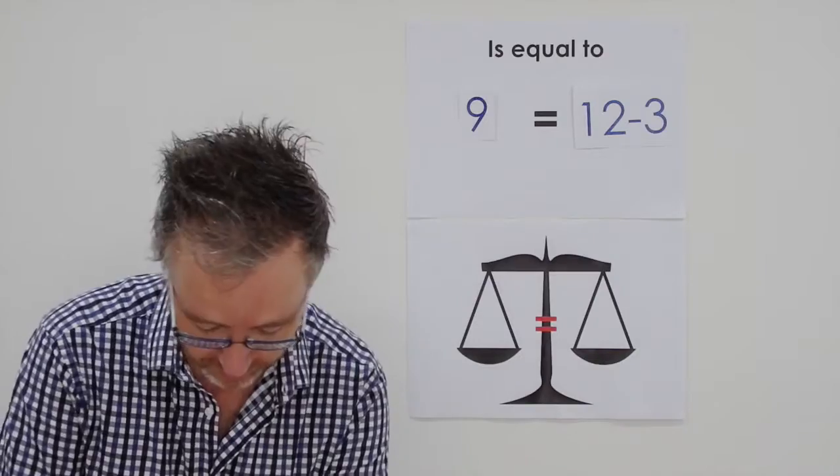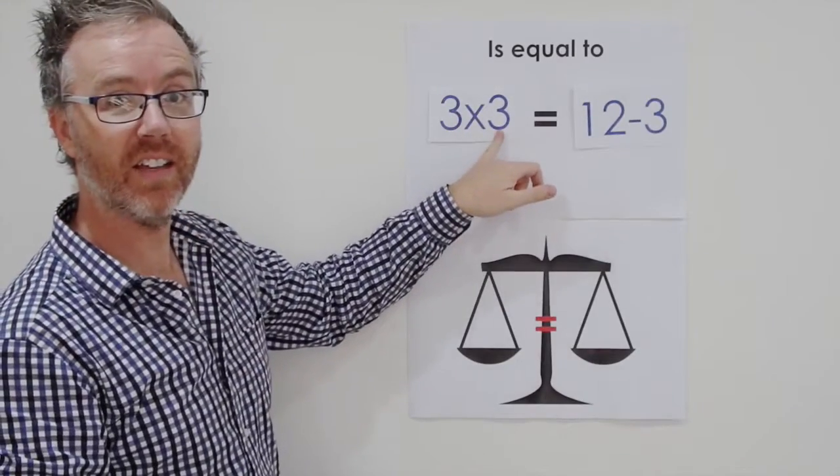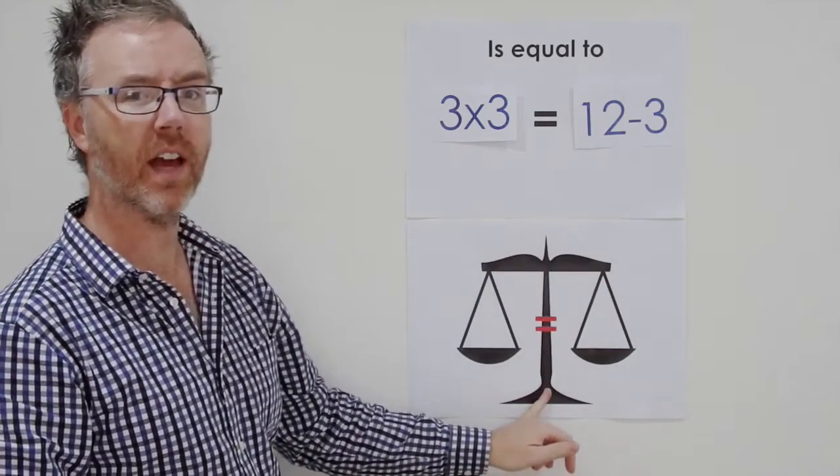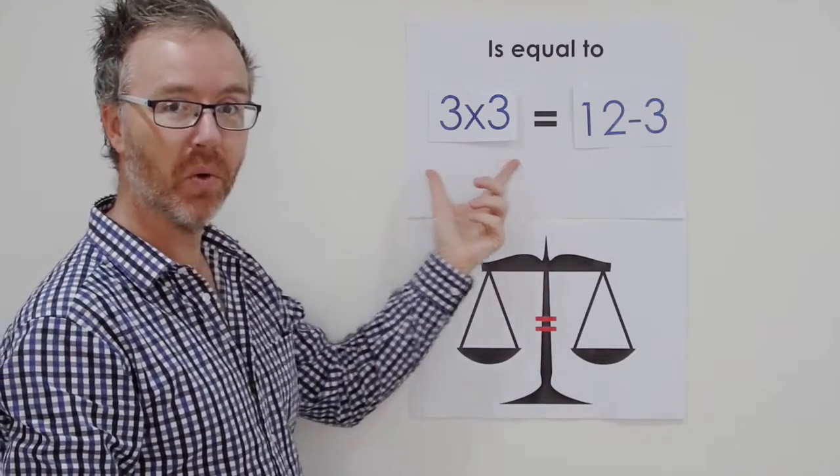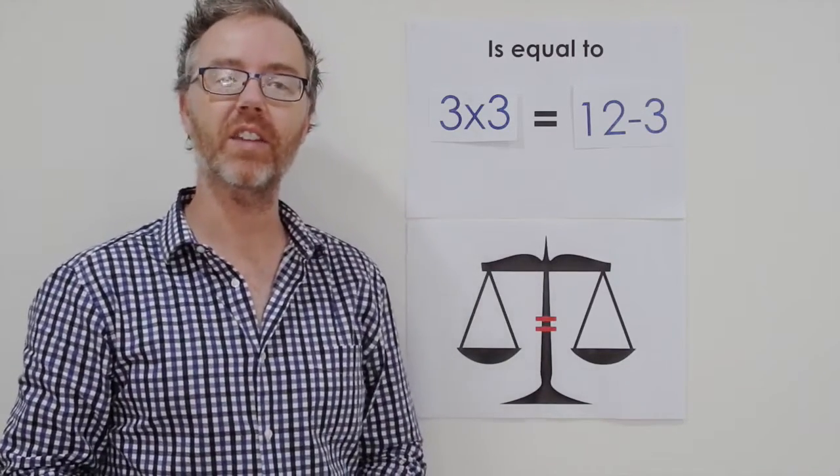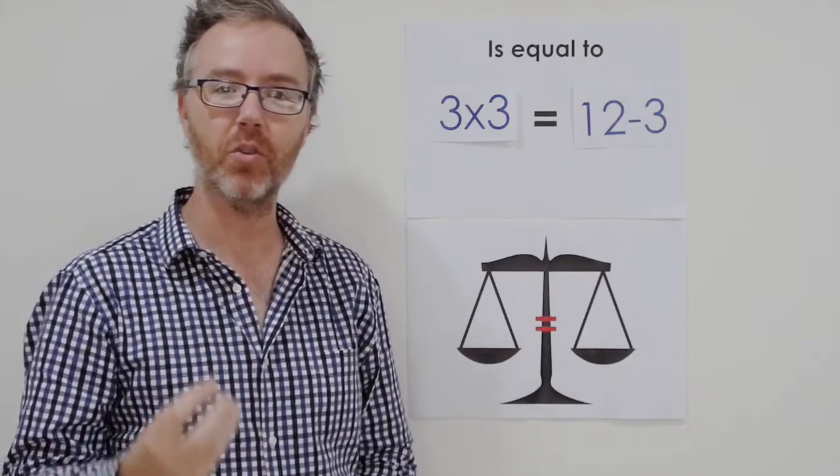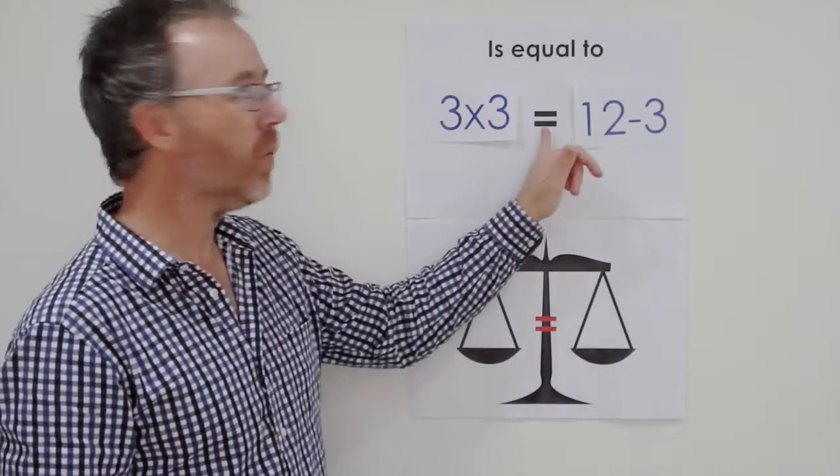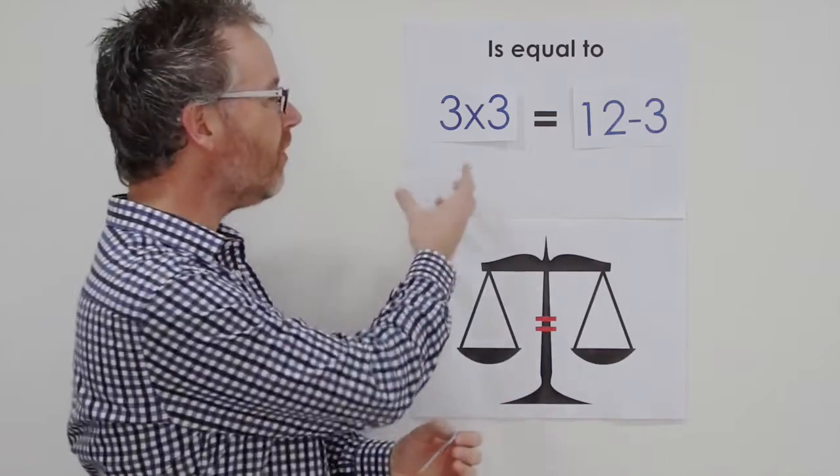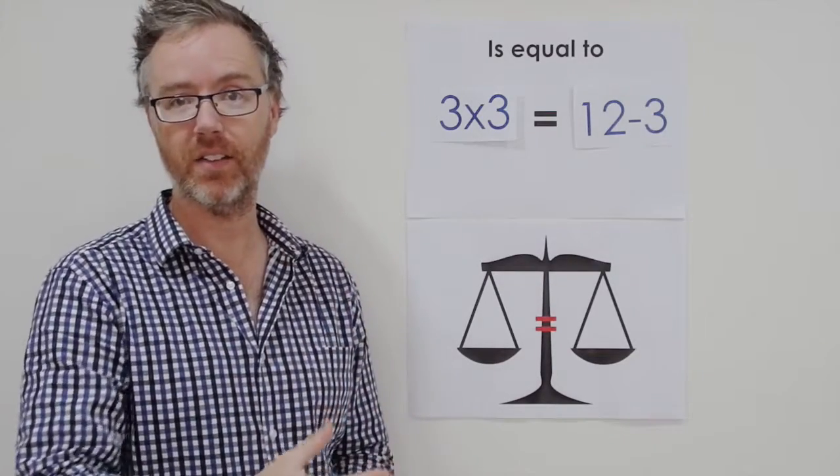And we might decide to put in a multiplication answer. 3 threes is equal to 12 take away 3. So long as, remember the equal sign is the fulcrum of the scales. It is telling us that this side is equal, the same as the other side. It's really important that we understand this. Because as our students move into more difficult maths, in particular equations and using algebra, we need to understand that equals is balance. Because as our maths becomes more complex, they will be able to move things around, move numbers and things around in the equations so that we can keep the balance. Let's try another example.